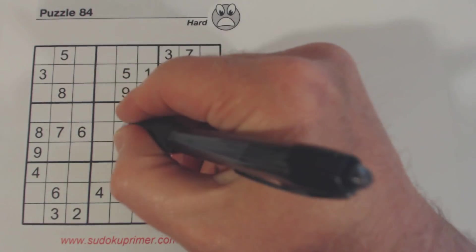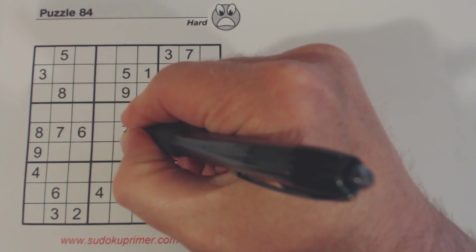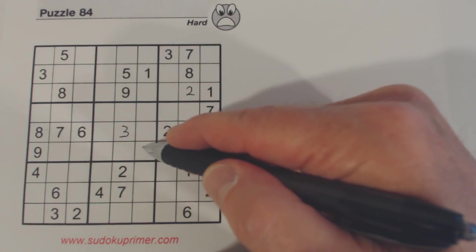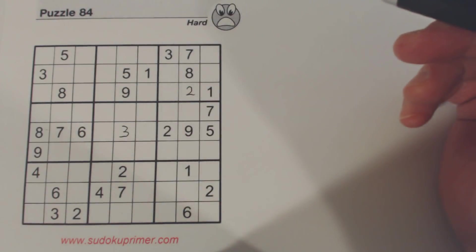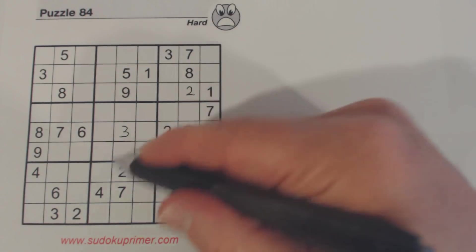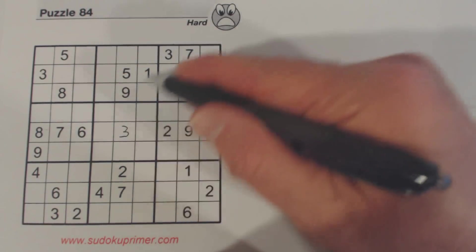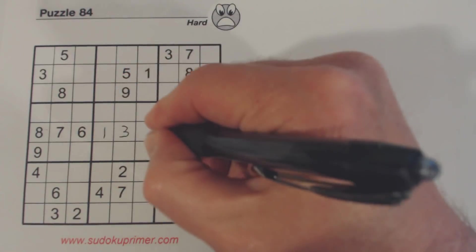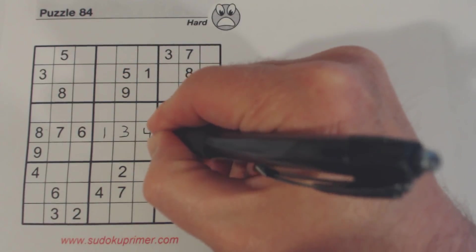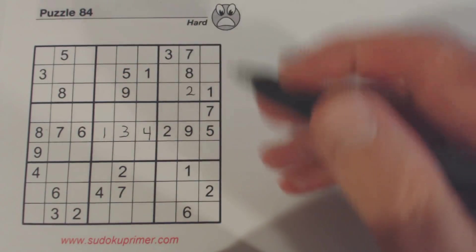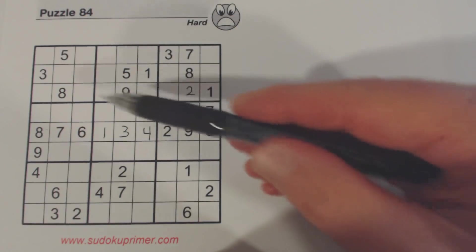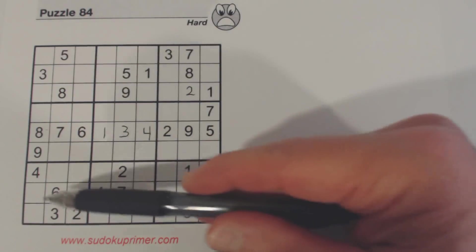One of those is a 3, and one of these is a 3. That covers both these columns, so the 3 in the middle has to be in the middle column in this middle box here. We know that middle cell in box 5 is a 3. And now, because of that, we can fill in the 1 and 4.